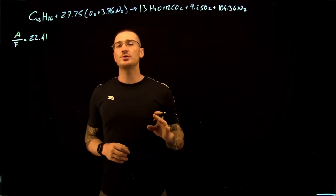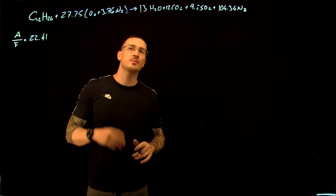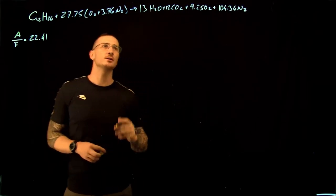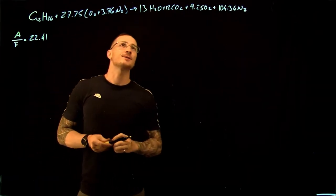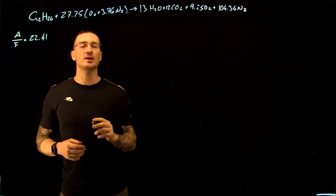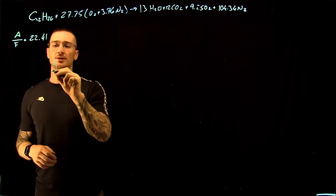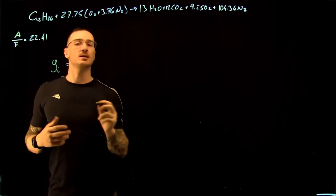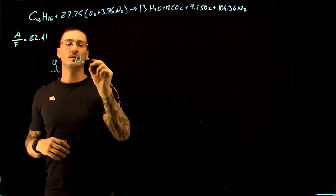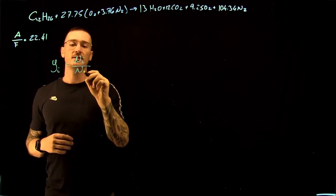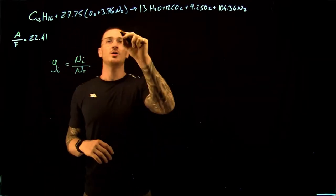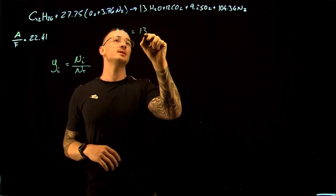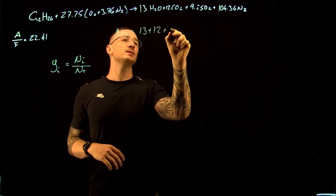We can solve for the dew point temperature of our products using the partial pressure of water in our product. So the first thing we'll do is find our mole fraction of water. We know that our mole fraction is equal to the number of moles divided by the total number of moles. Our total number of moles is equal to 13 plus 12 plus 9.25 plus 104.34, which gives us a total of 138.59.